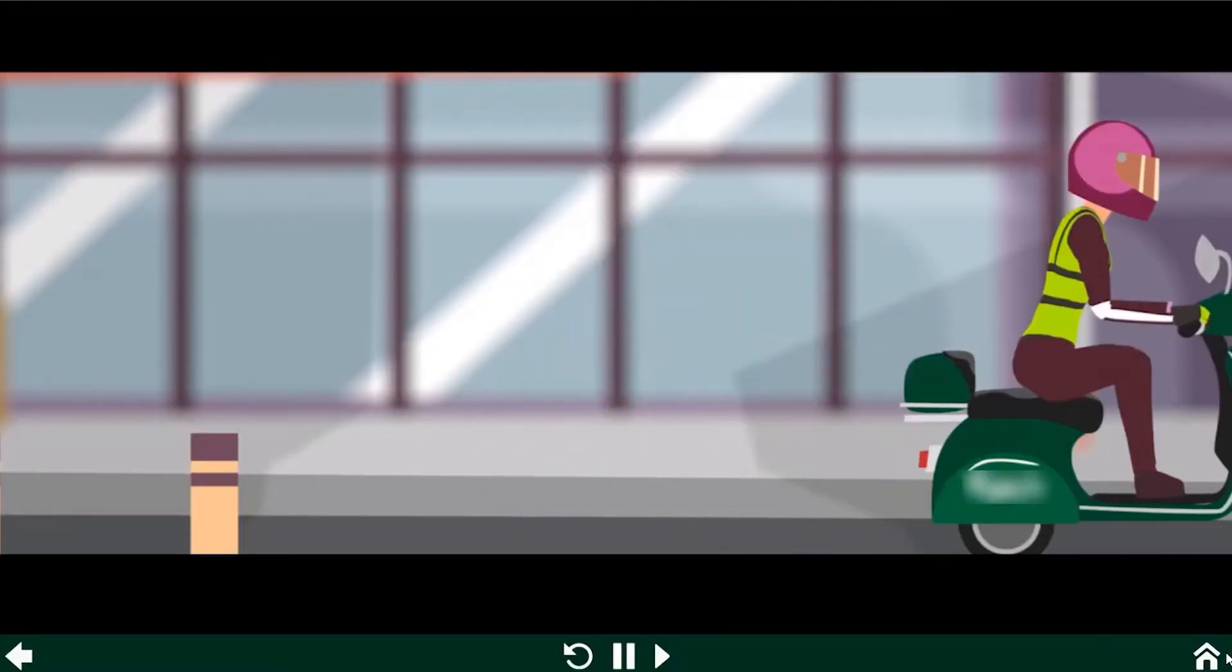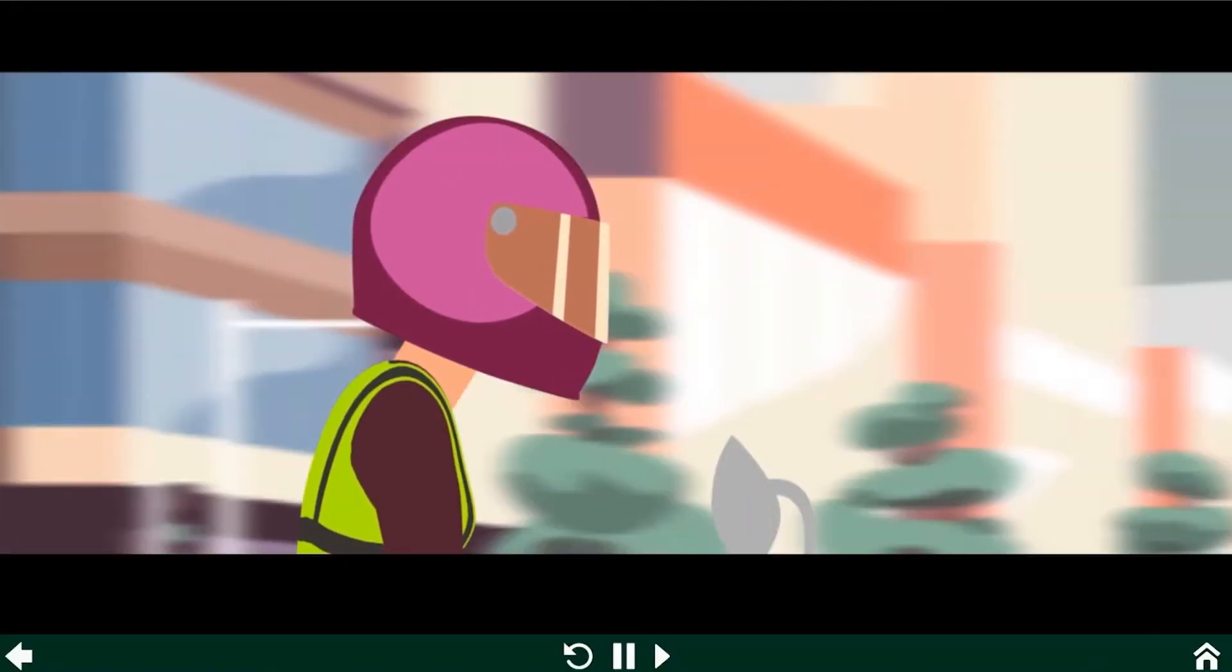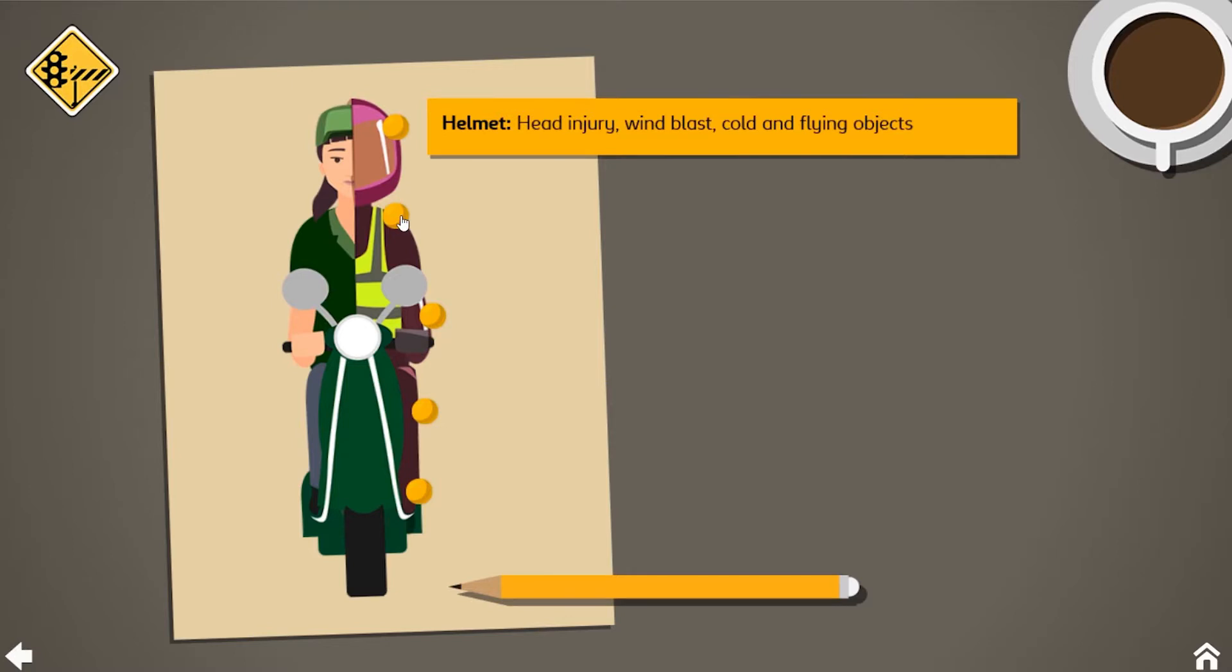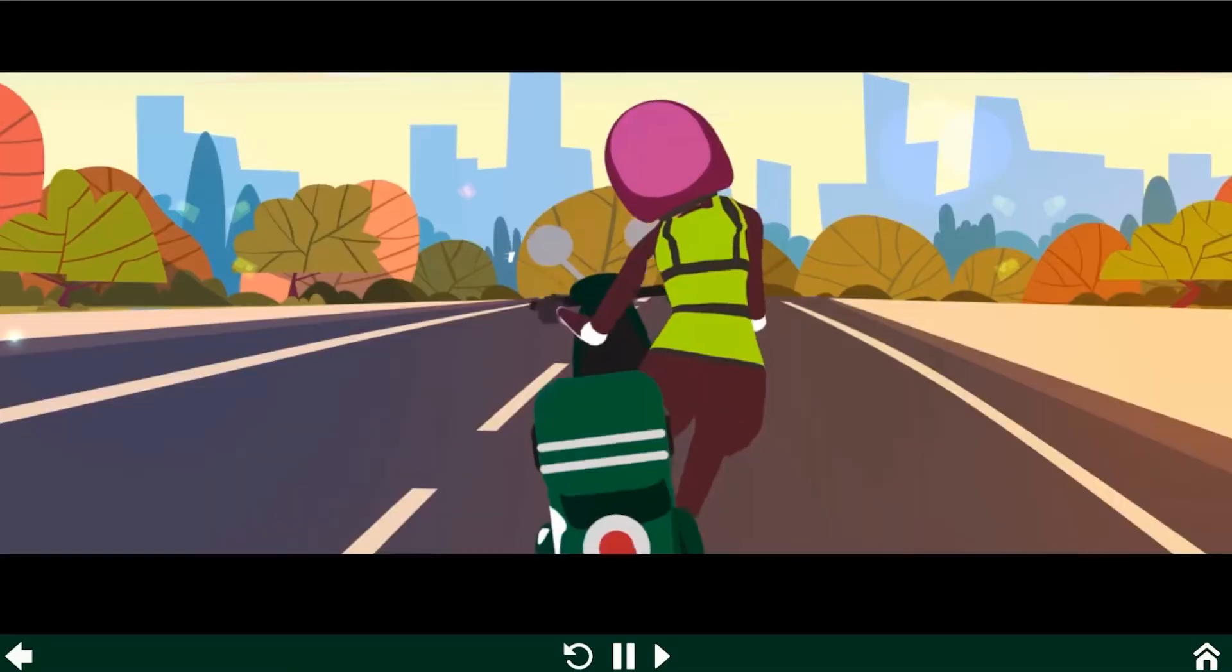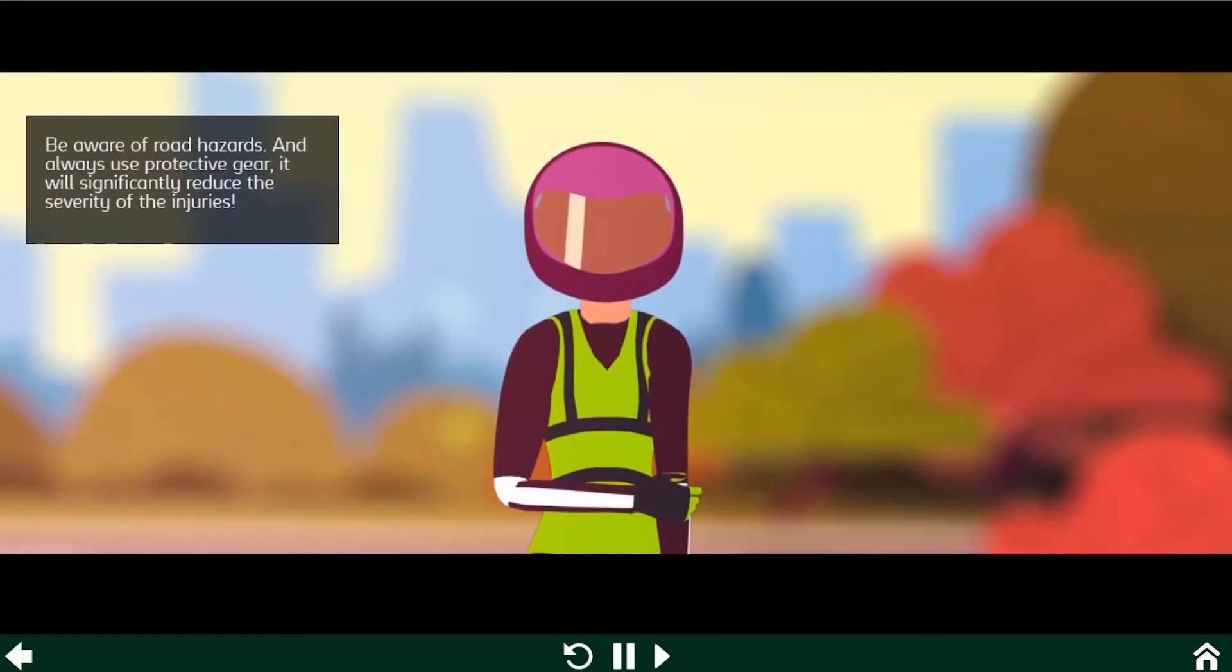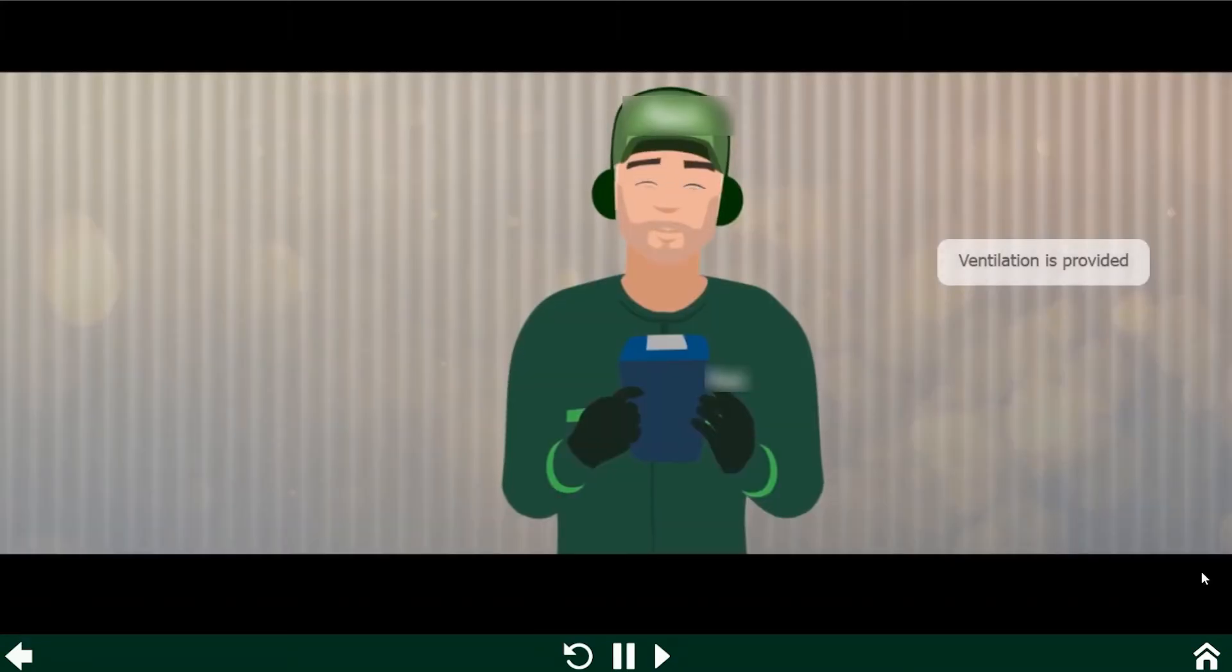The product would be comprised of several characters with different roles in the business and at key moments the learner would have to make decisions by clicking on a couple of options and these decisions drove the story.